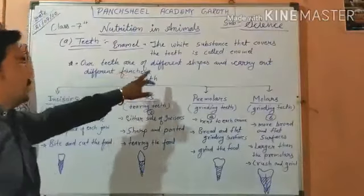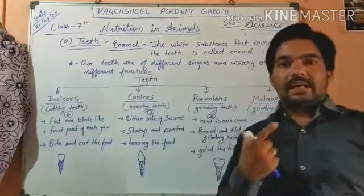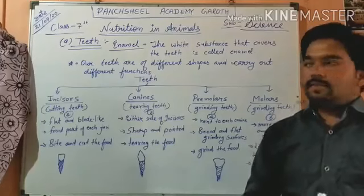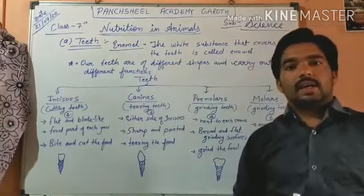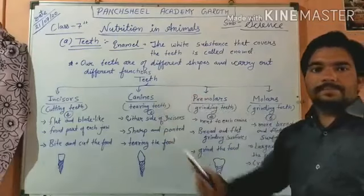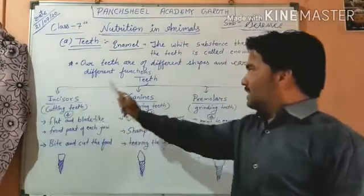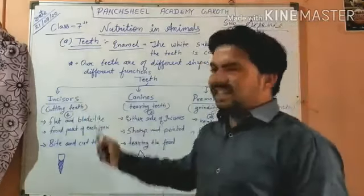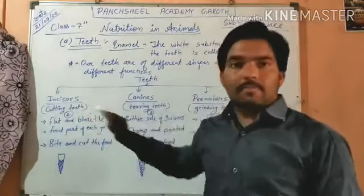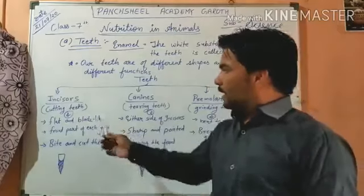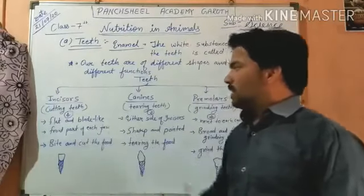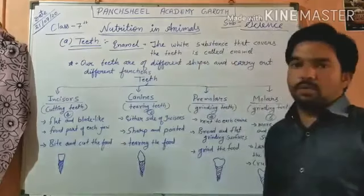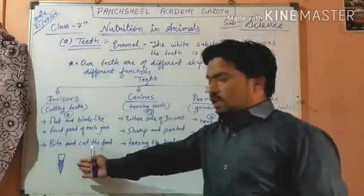Our teeth are of different shapes and carry out different functions. If you look at your teeth in a mirror, you will notice all teeth are not the same size. Teeth are mainly categorized into four types: incisors, canines, premolars, and molars. Incisors are the cutting teeth — the front teeth. There are four incisors; they are flat and blade-like, embedded in the front part of each jaw, and they help to bite and cut the food.